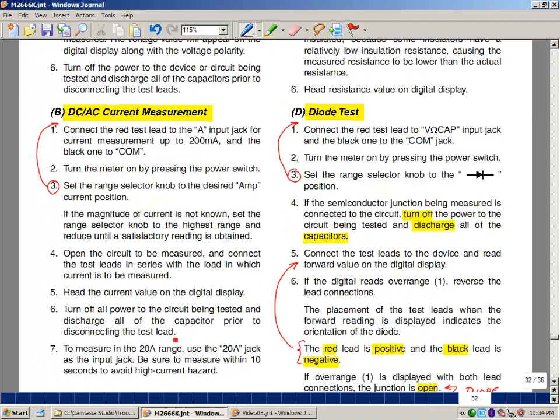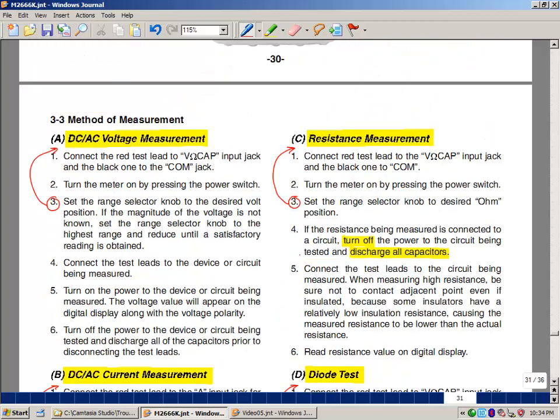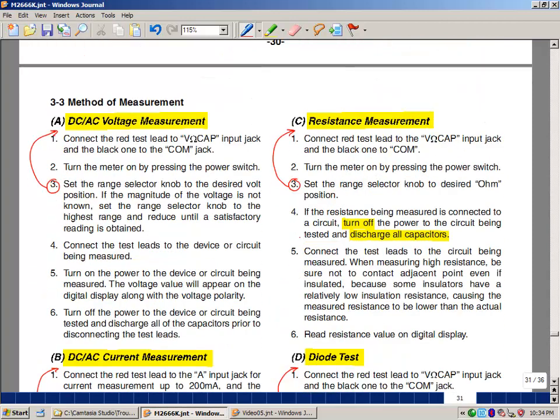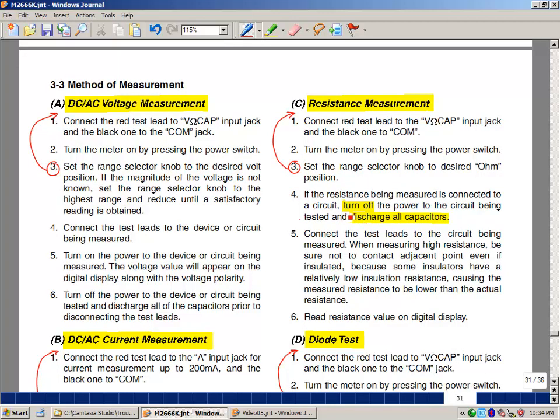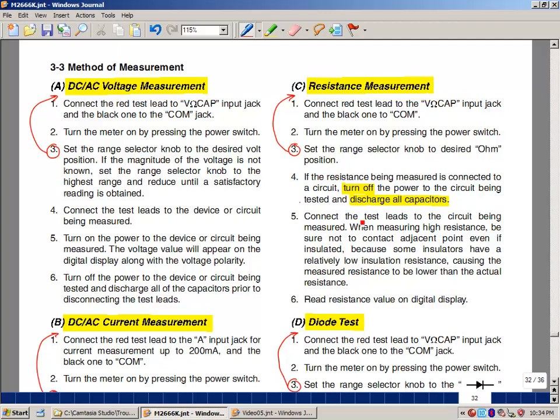Resistance measurement. Again I like to set the selector knob first. It talks about here measuring a resistance in a circuit. I wouldn't recommend doing that if at all possible but if you need to do that you should turn the power off in the circuit first and then try to discharge the capacitors. We'll talk more about this later in this troubleshooting class but capacitors can hold a voltage for a very long time. One way to discharge them is to put a low resistance across their terminals. You got to be careful because there can be an arc or a spark when you do that. I prefer that you test all resistors out of a circuit just like we were doing before.